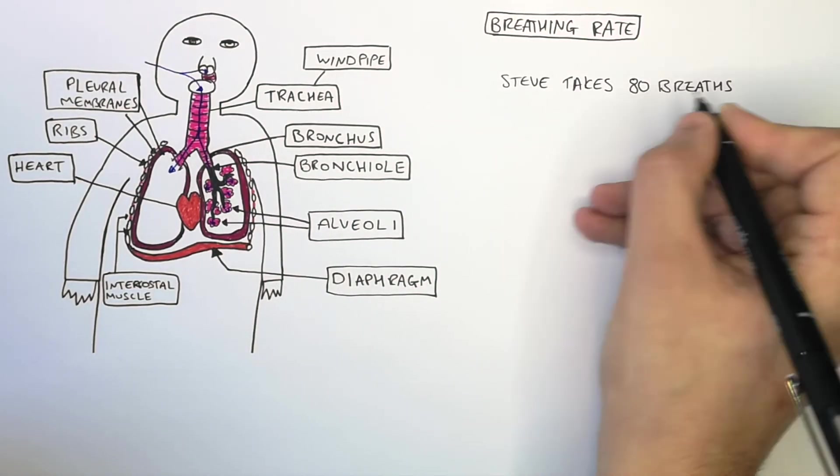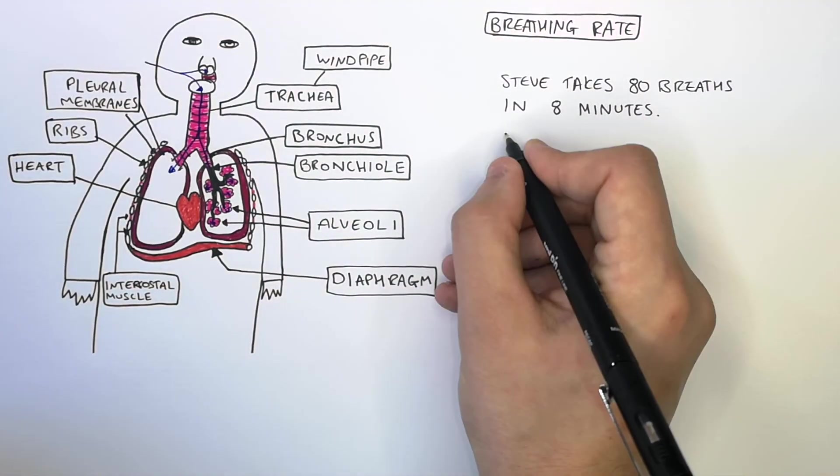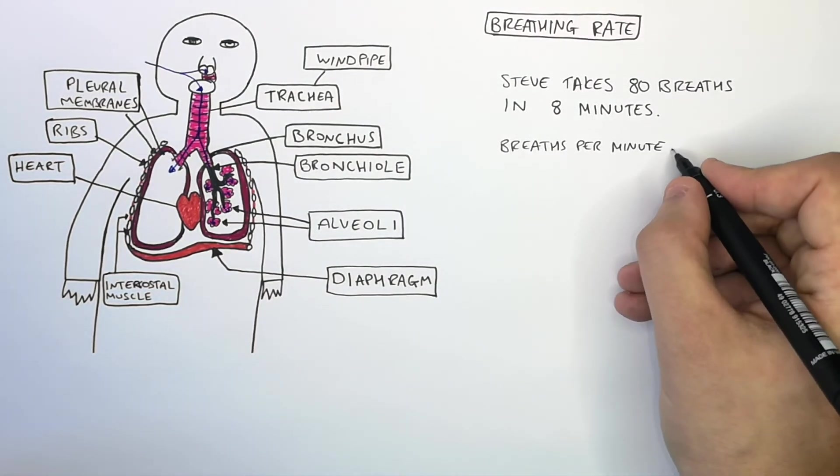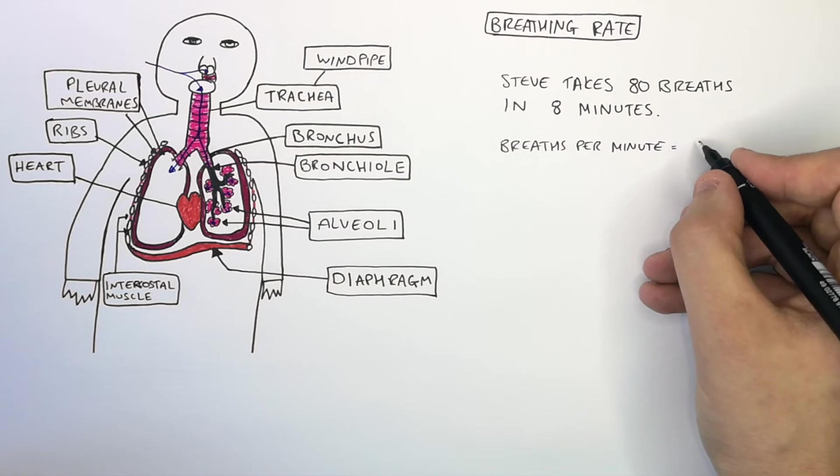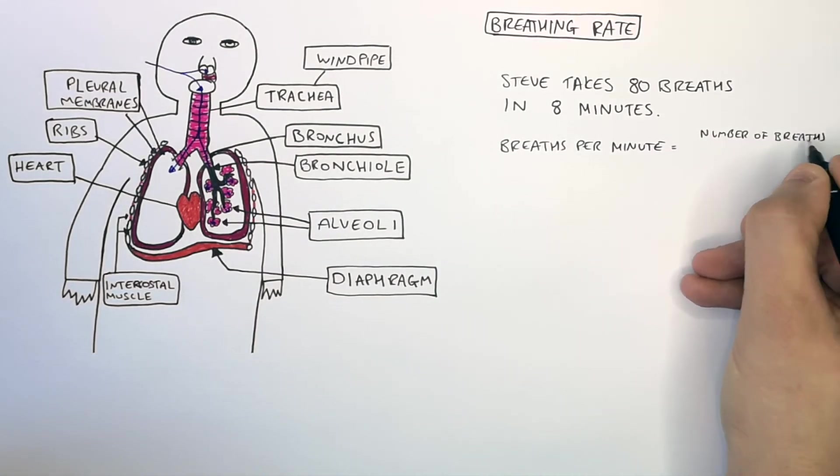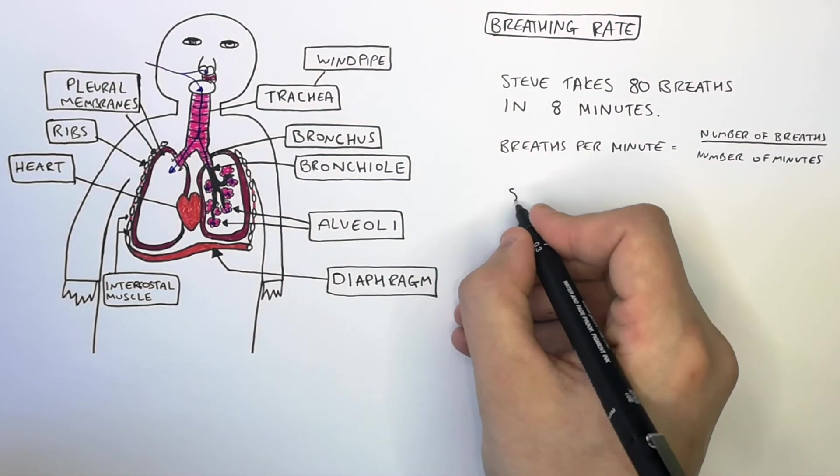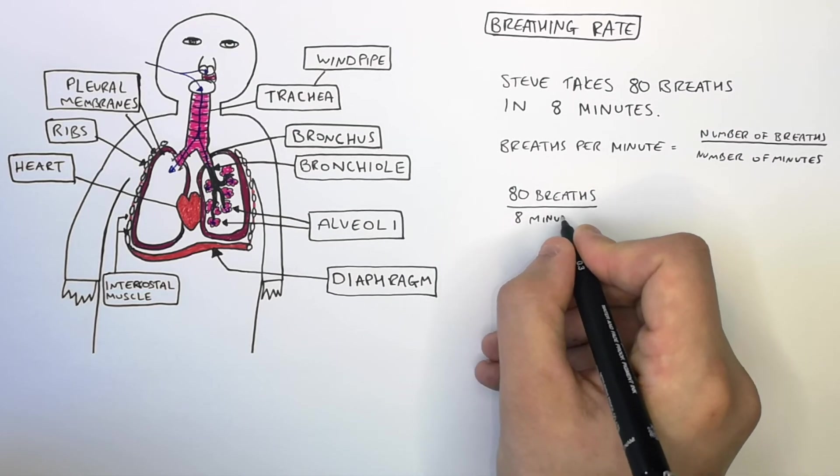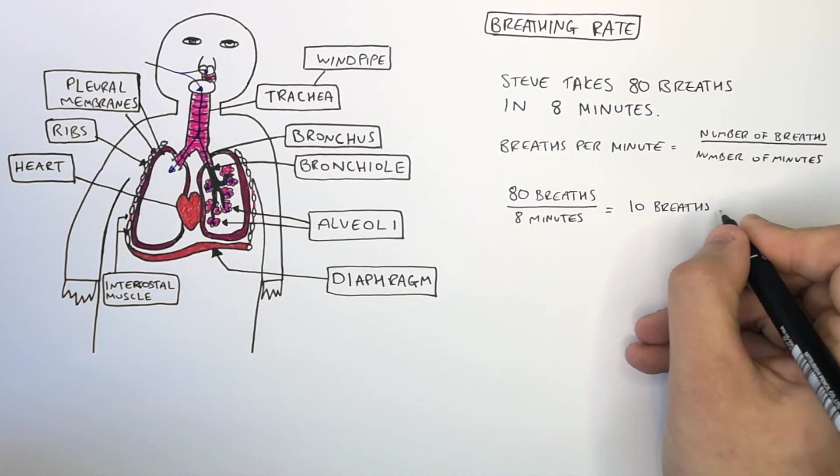Steve takes 80 breaths in 8 minutes. We're going to work out his breathing rate in breaths per minute. So breaths per minute equals the total number of breaths divided by the time. So in this case, it's going to be 80 breaths divided by 8 minutes, which gives you 10 breaths per minute.